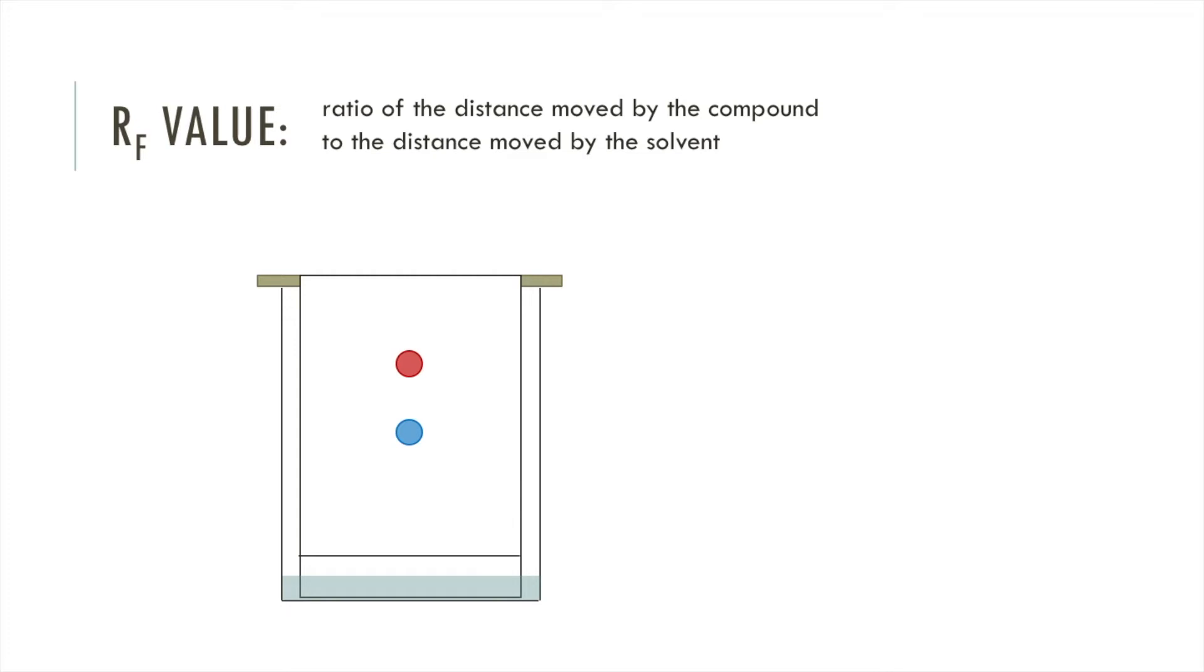The ratio of the distance moved by a compound to the distance moved by the solvent is known as the RF value and it's calculated by the distance moved by the substance divided by the distance moved by the solvent. Different compounds have different RF values and the same compound in different solvents will have different RF values.